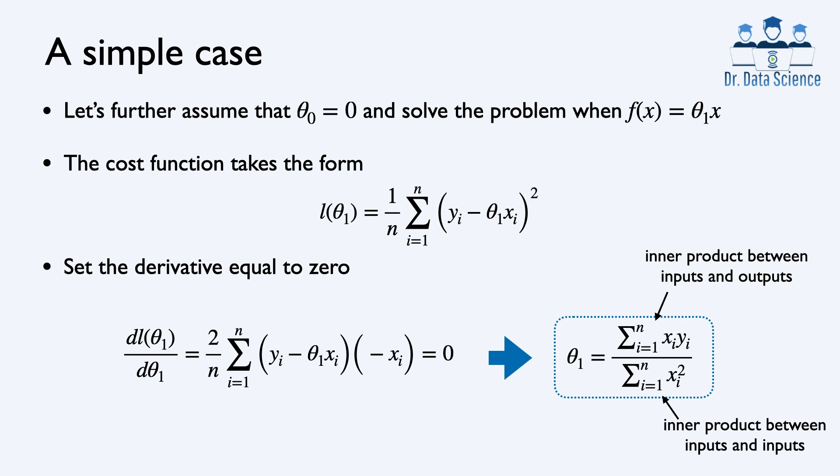We can form two one-dimensional arrays: one containing input values x_1 through x_n, and another containing output values y_1 through y_n. In the numerator of theta_1 we have the inner product or dot product between inputs and outputs, and in the denominator we have the inner product between inputs and inputs. In this way, we can simply compute the value of theta_1.